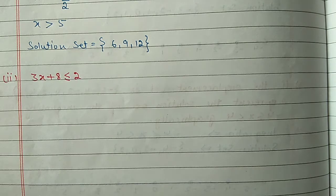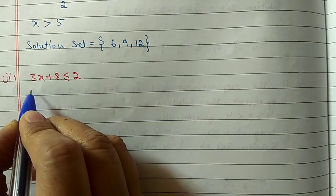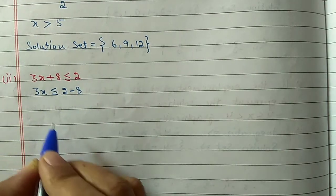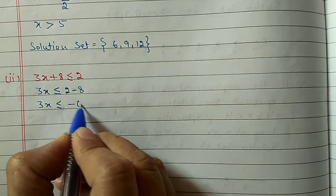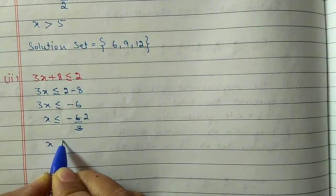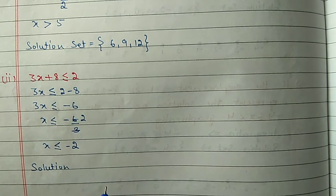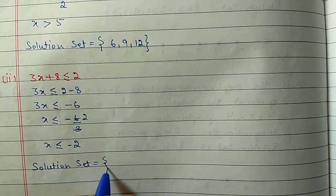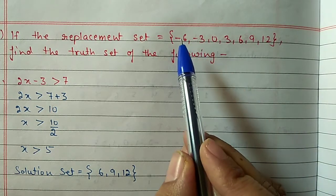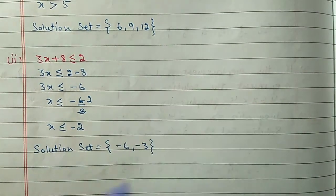Second part: 3x plus 8 less than or equal to 2. Shift 8: 3x less than or equal to 2 minus 8, giving 3x less than or equal to minus 6, so x less than or equal to minus 2. From the replacement set, numbers less than or equal to minus 2: minus 2 is not in the set, so we take minus 3 and minus 6. Solution set is {-6, -3}.